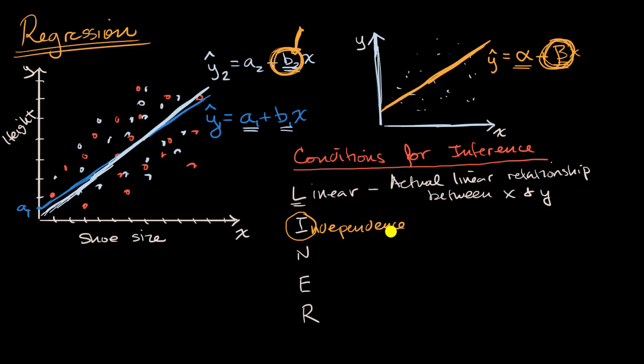or you could be thinking about your 10% rule that we have done when we thought about the independence condition for proportions and for means, where we would need to feel confident that the size of our sample is no more than 10% of the size of the population.